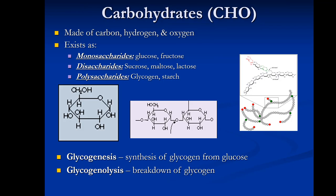Carbohydrates are made up of carbon, hydrogen, and oxygen, and exist in different forms: monosaccharides, disaccharides, and polysaccharides. Monosaccharides are single units — glucose is the best example, which is a six-carbon unit. A disaccharide is two units linked together, such as sucrose, maltose, or lactose. Polysaccharides are hundreds or thousands of monosaccharides linked together — glycogen is the major example in the body, stored in the liver and in muscle.